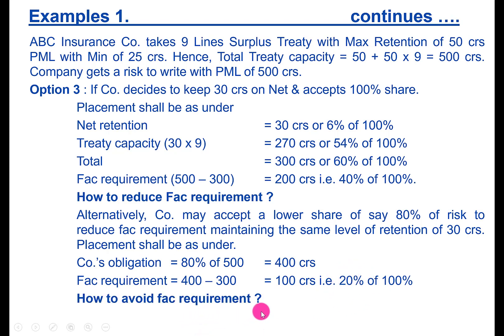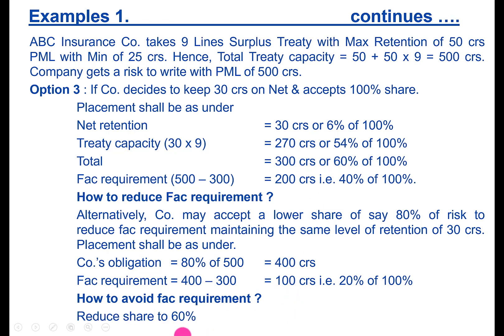To avoid FACA entirely, since 60 percent is your treaty capacity, take a share of maximum 60 percent so that no FACA would be required.